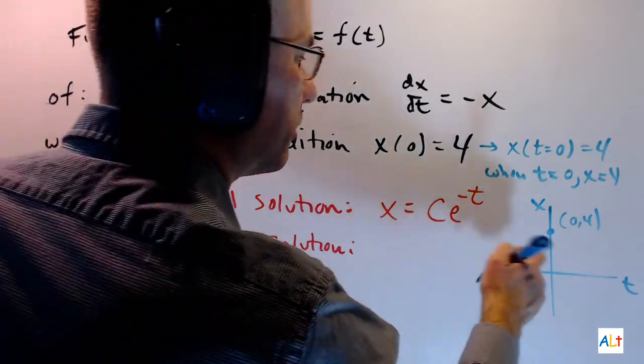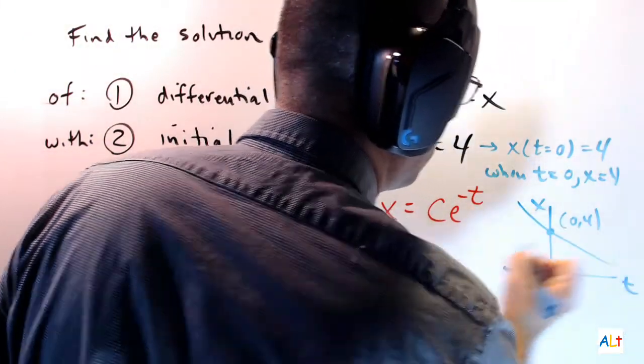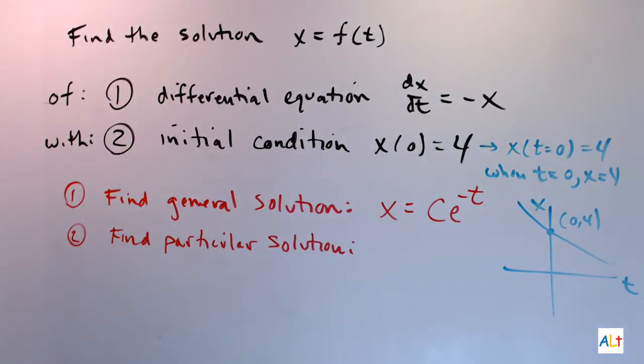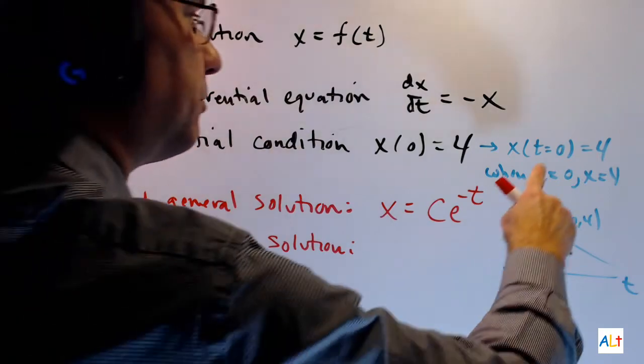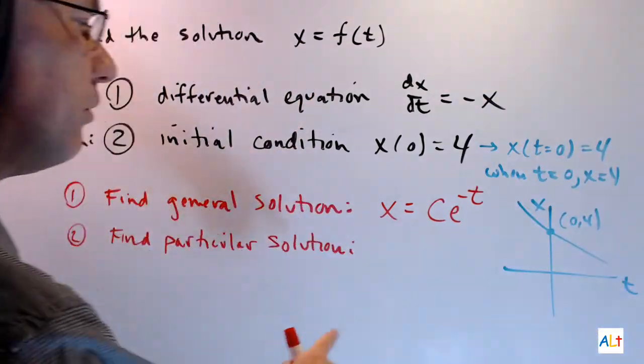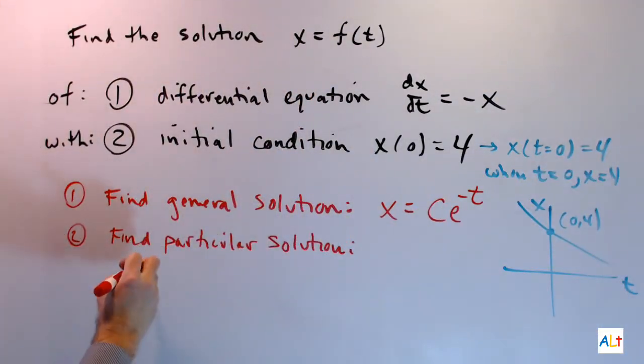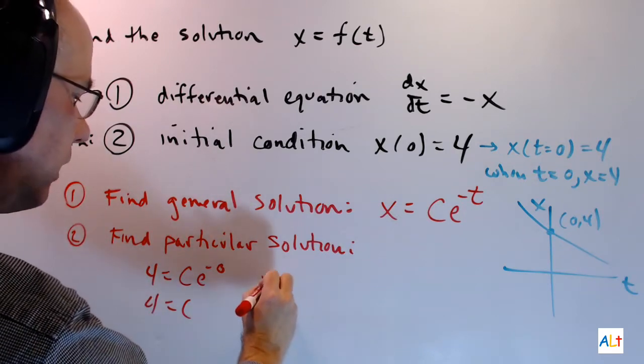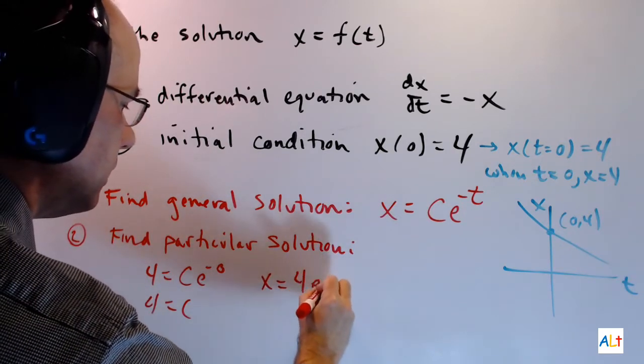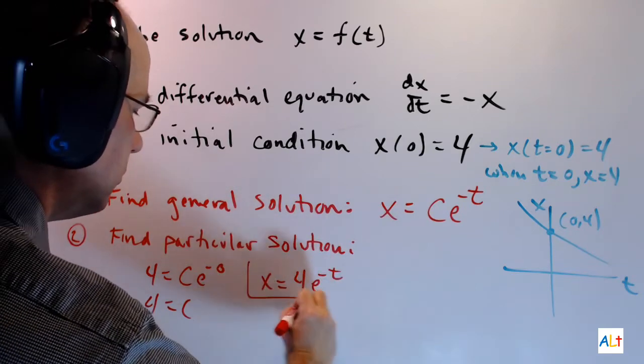Now we already know this is a decaying exponential, so it should look more or less like that. So how do we get this particular solution? Well, it's easy enough. You need to substitute in t equals zero and x equals four and see what you get for c. So there's x equals four and then there's t equals zero. And of course e to the zero is one, so we get four equals c, and therefore the particular solution is x equals four e to the negative t.